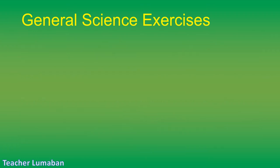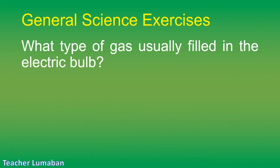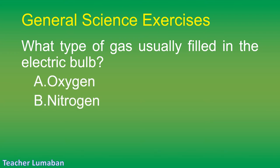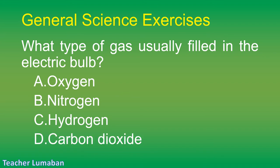What type of gas is usually filled in the electric bulb? Letter A: oxygen. Letter B: nitrogen. Letter C: hydrogen. Letter D: carbon dioxide.